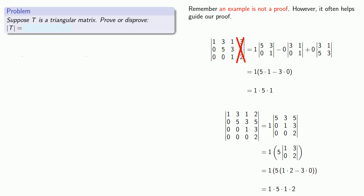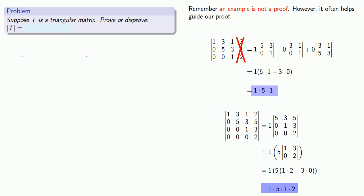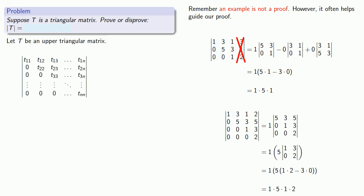At this point we might notice some important things. For our triangular matrices, the determinant seems to be the product of the entries along the main diagonal. So let's see if we can generalize it. The value of doing the examples is it gives us insight into how our proof should proceed. In our examples, we found the determinant by expanding along the first column. So let's take an upper triangular matrix and repeatedly expand each minor along the first column.